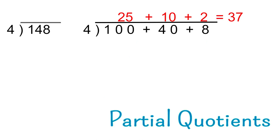Another way to think about this is with partial quotients. We're thinking about the number and about place value. So instead of saying four doesn't go into one, we can say how many fours are in 100 — 25. How many fours are in 40 — another 10. Then how many fours are in 8 — another 2. When you add the partial quotients together, you get the answer. It's just another way to think about these numbers and make sense of it in your head.